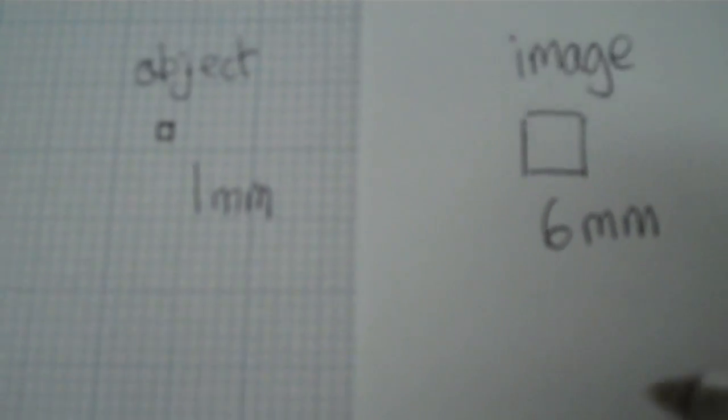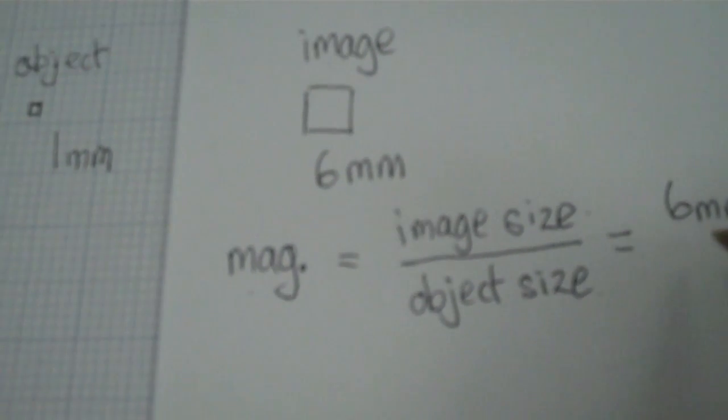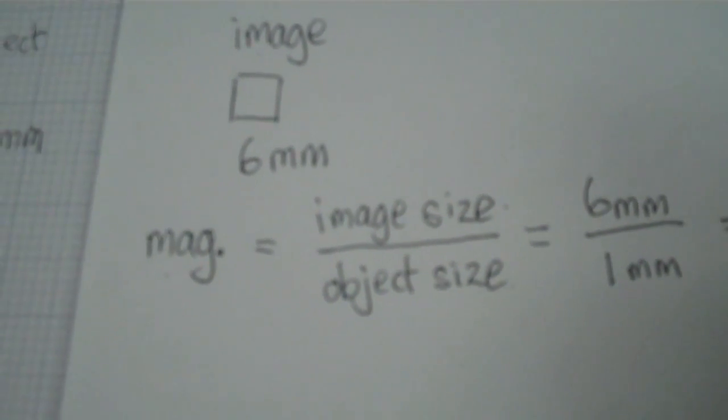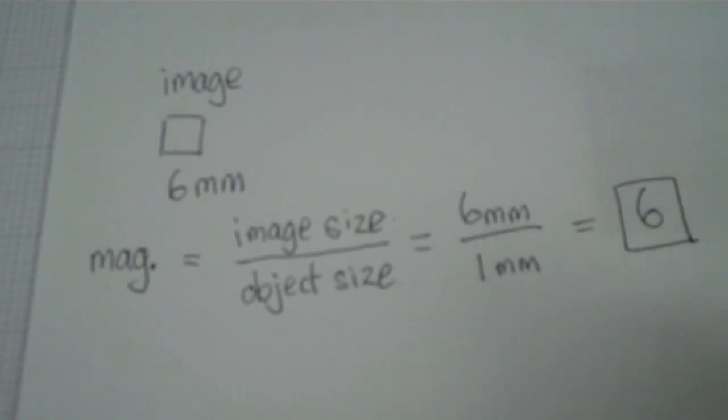When we're working out the magnification, all we want to do is work out how many times bigger the image is than the object. And this is very straightforward. Because if that was 1 millimetre wide, and this appeared 6 millimetres wide, it's very easy. What we do is this. We work out the magnification like this. The magnification, which I'm going to abbreviate to mag, but it's the magnification, is basically how big the thing looks, the image looks. So we're going to write the image size compared to the object size. Now I'm going to divide these, divide the image size by the object size. And that will give me 6 millimetres compared to the 1 millimetre size it was before. Now when I do this, that gives me just 6.